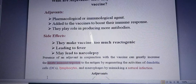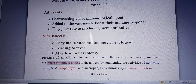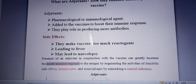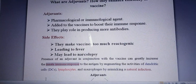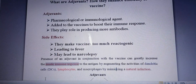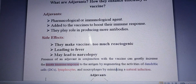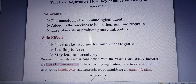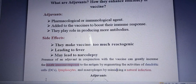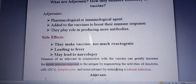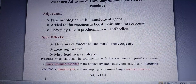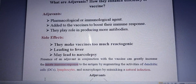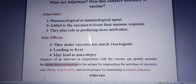We can say that the presence of an adjuvant in conjugation with the vaccine can increase the immune response — specifically the innate immune response, the natural immune response of a cell — by augmenting the activities of the components of the immune system, i.e., dendritic cells, lymphocytes, and macrophages, and it mimics the natural infection.